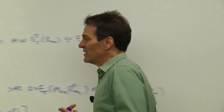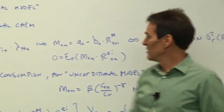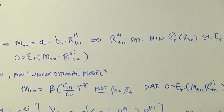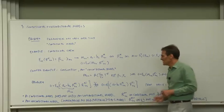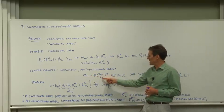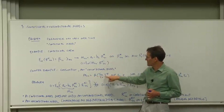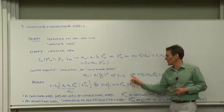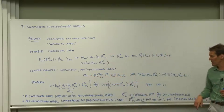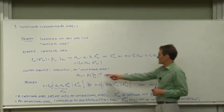A counter example is the consumption based model, which is an example of what I call an unconditional asset pricing model. This is an asset pricing model where M equals beta times consumption growth to the minus gamma. And notice, beta and gamma don't vary over time, at least in this version of the model. They are not parameters that vary over time.